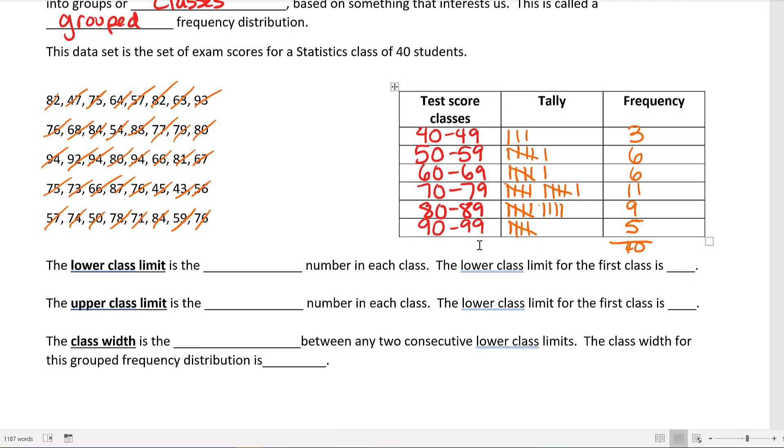The lower class limit is the leftmost number in each class. For example, the lower class limit for the first class we see here is 40. The upper class limit is the rightmost or largest number in each class. So the upper class limit for the first class would be 49. The class width is the difference between any two consecutive lower class limits. Between the first and second lower class limits, I can take 50 minus 40, which gets us 10. So the class width for this particular grouped frequency is 10. You can take any other consecutive lower class limits and subtract them and you'll still get the same class width. The class width needs to be the same for the entire frequency distribution, otherwise it will be skewed.